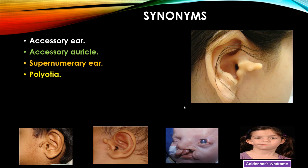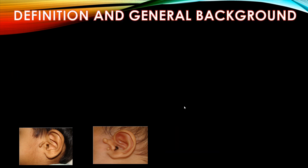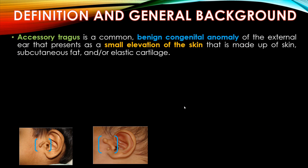Supernumerary ear, polyotia. Definition and general background: Accessory tragus is a common benign congenital anomaly of the external ear that presents as a small elevation of the skin made up of skin, subcutaneous fat, and/or elastic cartilage.